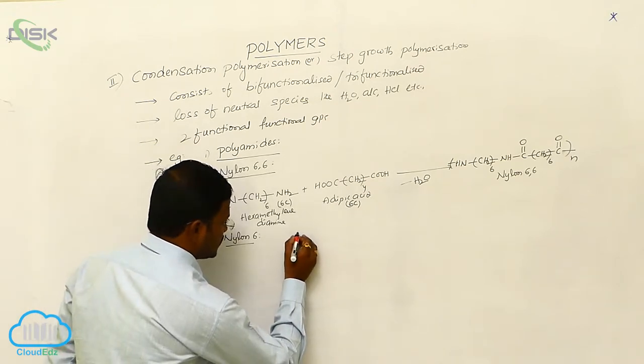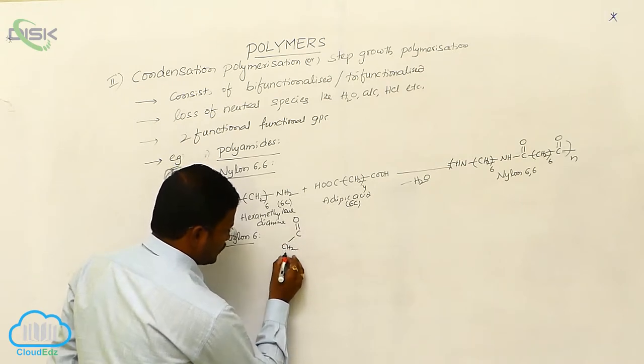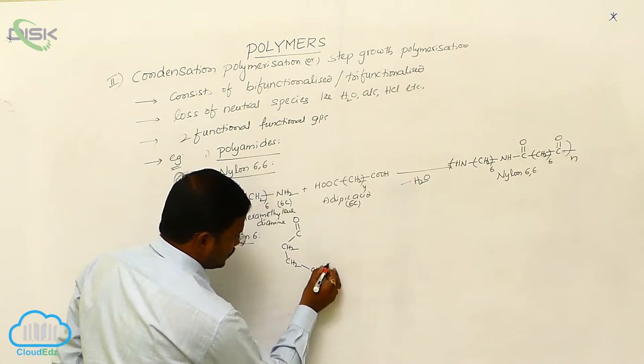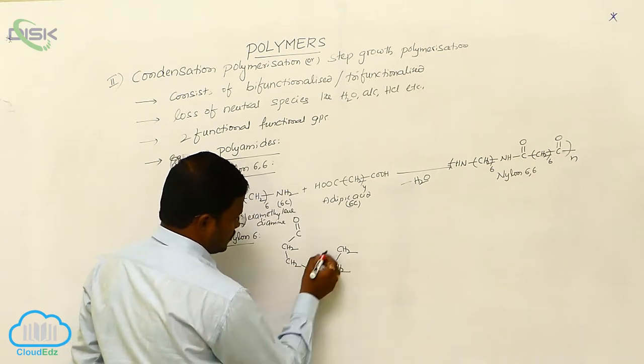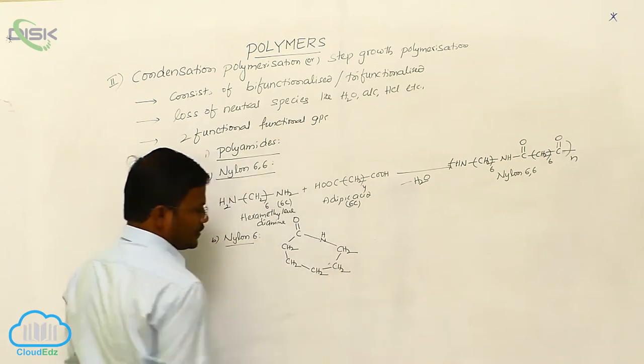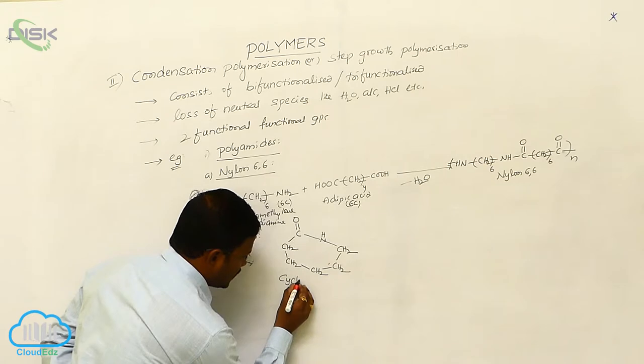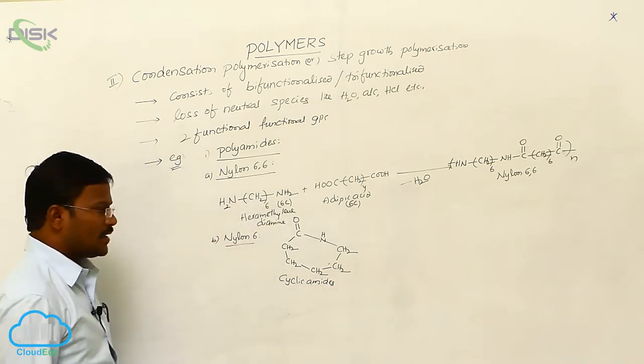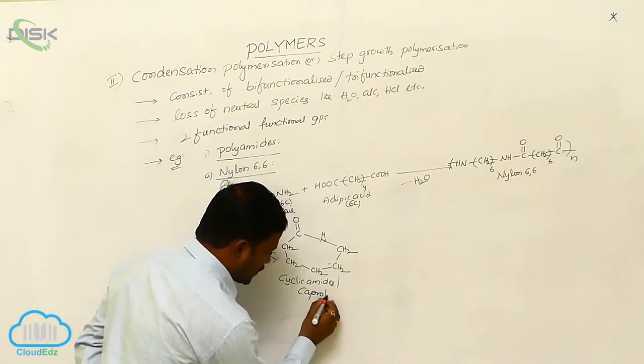C=O, (CH2)5, NH. These are called cyclic amides. Cyclic amides. They are also called caprolactam.